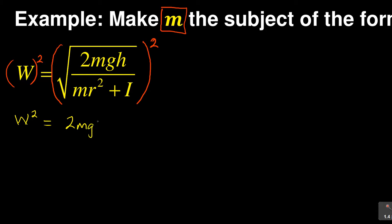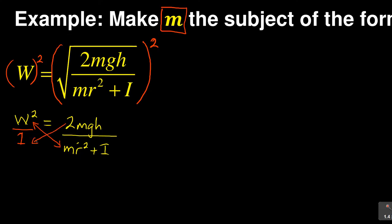You have now managed to get rid of the square root. Since you have a fraction on the right-hand side, you can write the left-hand side divided by one — because dividing by one doesn't change anything. This gives you a fraction on both sides, which allows you to introduce cross-multiplication. In cross-multiplying, the numerator on one side multiplies the denominator on the other.